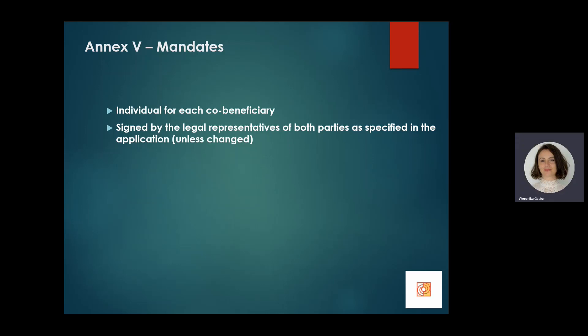Annex 5 includes mandates — letters of intent confirming the willingness of the beneficiary and consortium members to participate in the project and act in compliance with contractual obligations, which the Irish beneficiary signs on behalf of the project consortium. Each mandate is signed by your legal representative and also the legal signatory of the relevant project partner. In the majority of cases, mandates included in this annex are the same as those submitted with the application forms, unless some details have changed during the period between application submission and contracting.